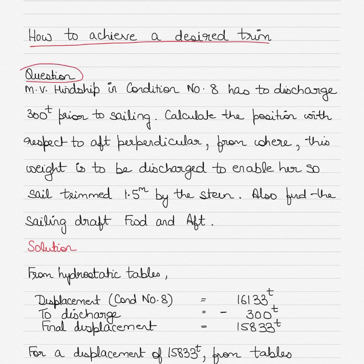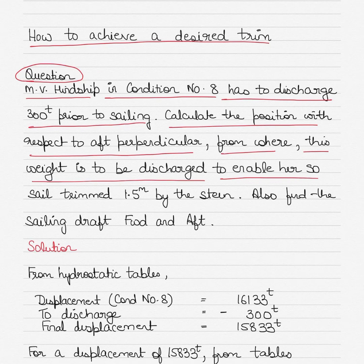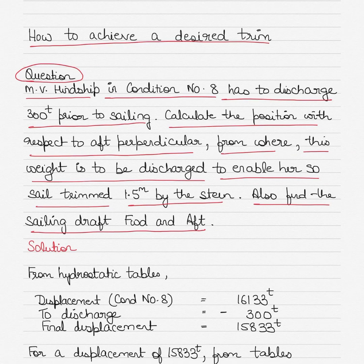Today's question is that MV Hinship, or motor vessel Hinship, is in condition number 8 and has to discharge 300 tons prior to sailing. Calculate the position with respect to the aft perpendicular from where this weight is to be discharged to enable her to sail trimmed 1.5 meters by stern. You also have to find the sailing drafts forward and aft.